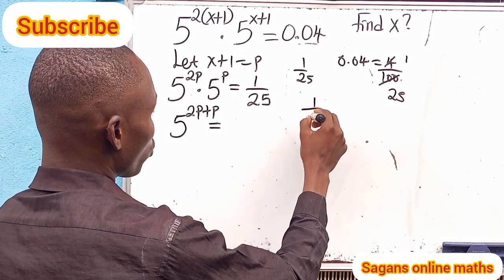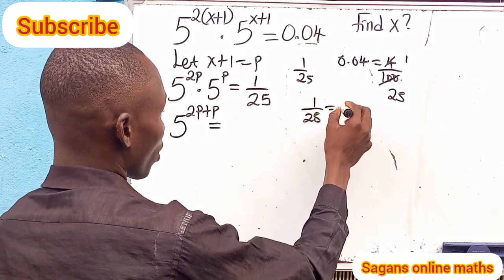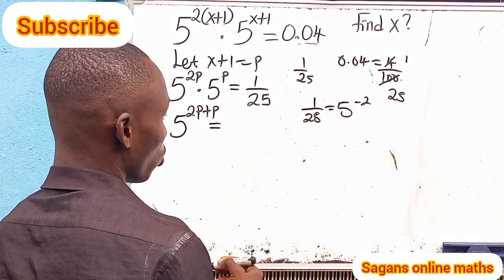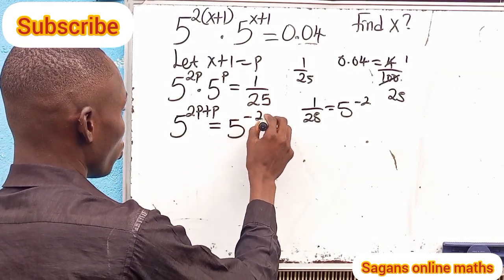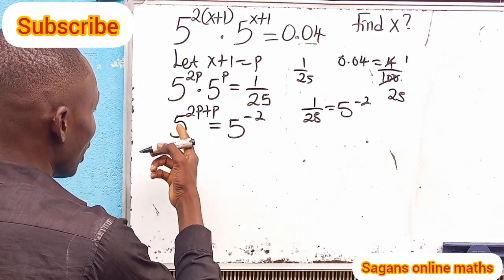And by one of the laws of indices, 1 over 25 is equal to 5 raised to -2. So on the right-hand side we have 5 raised to -2.